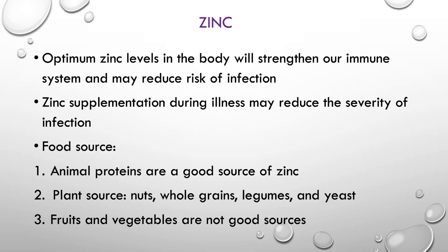Most zinc comes from animal proteins, which are a better source than plant proteins in terms of bioavailability — meaning how much zinc is actually absorbed from the diet. Good plant sources include nuts, whole grains, legumes, and yeast; fruits and vegetables are not good sources. Vegetarians who take largely plant-based proteins and low-protein diets are more susceptible to zinc deficiency.